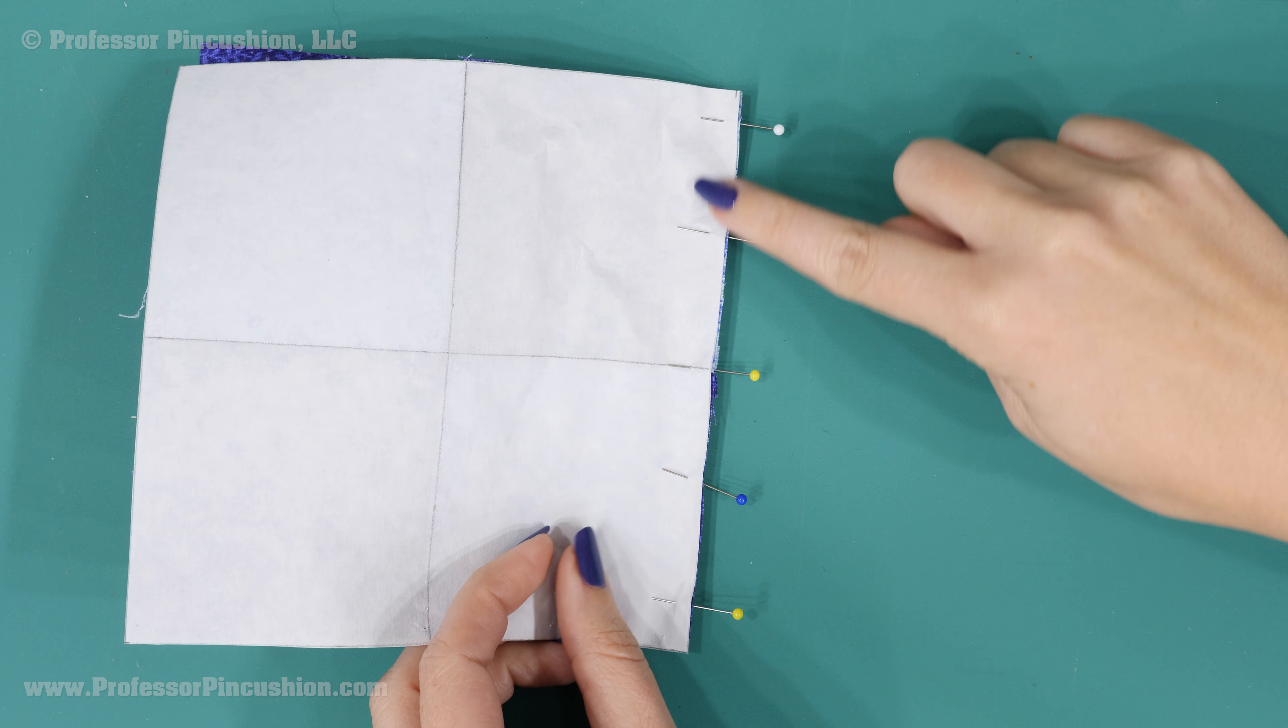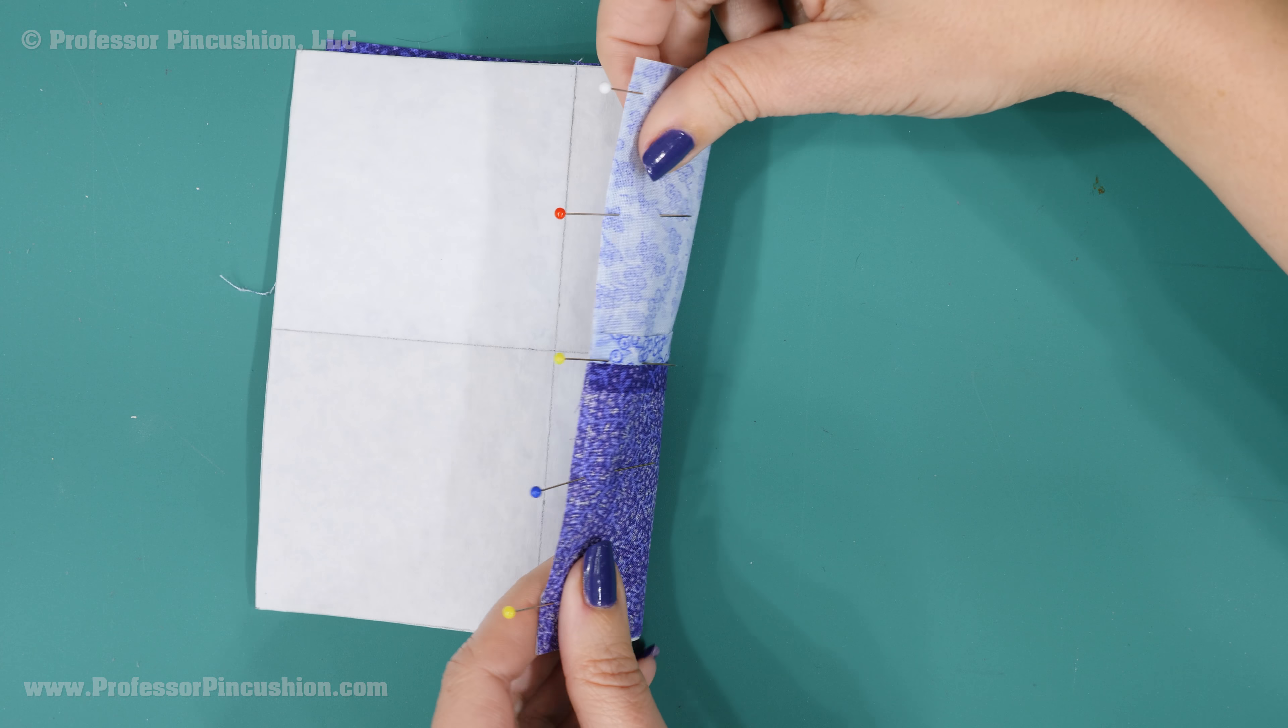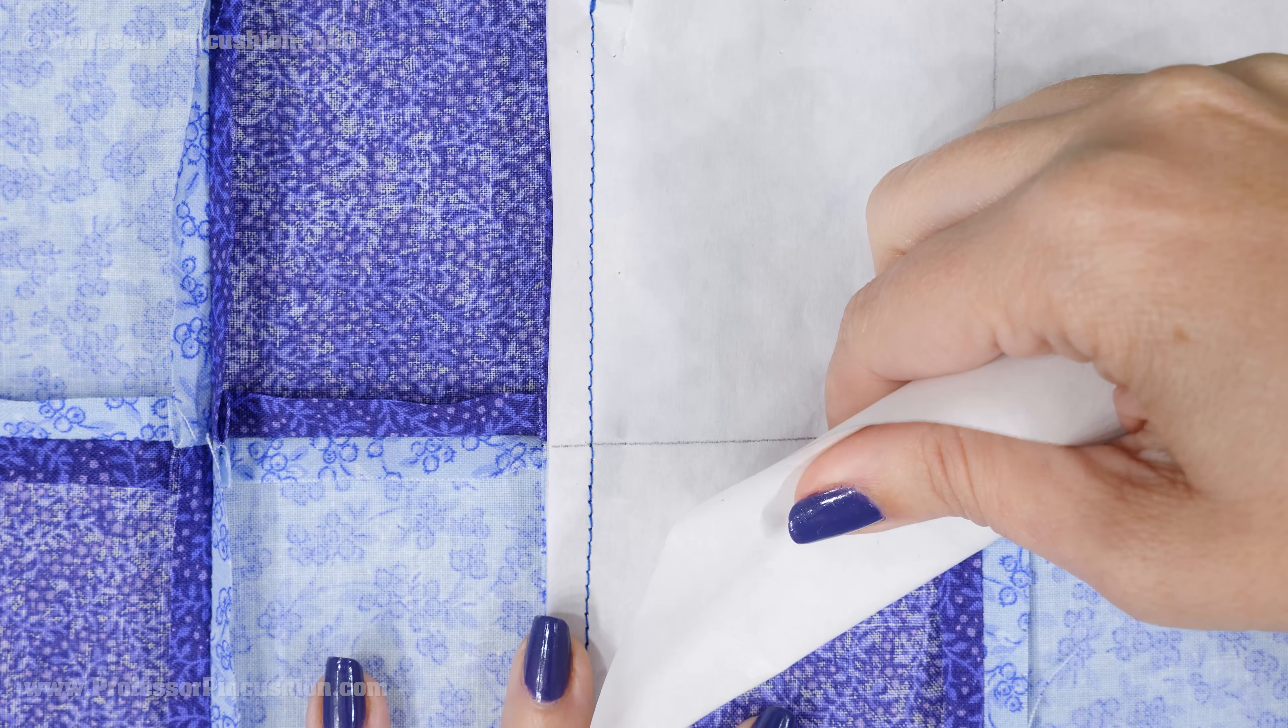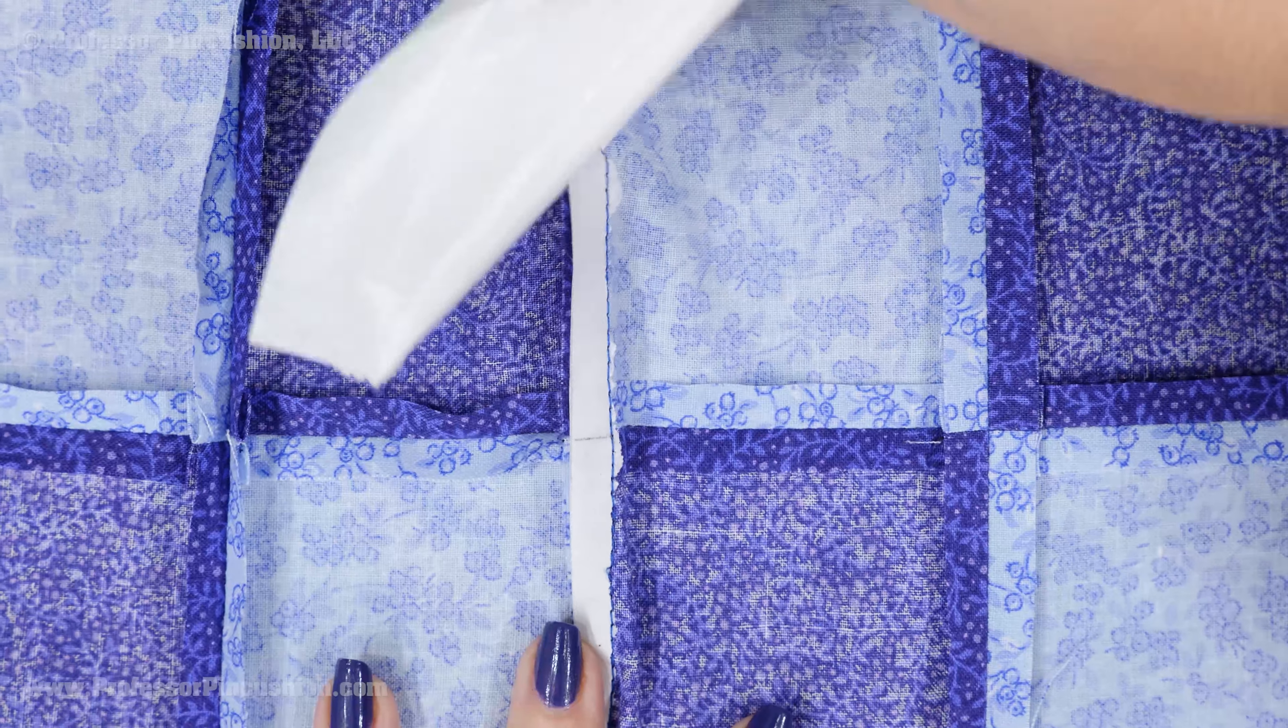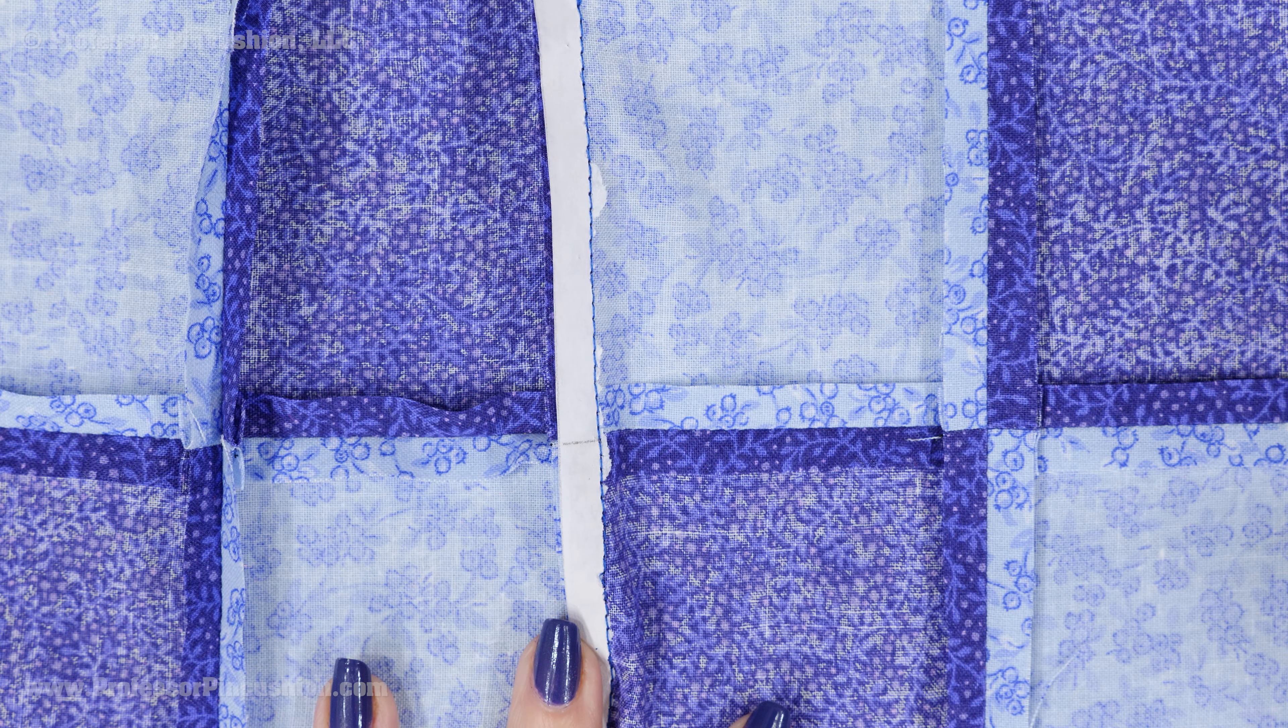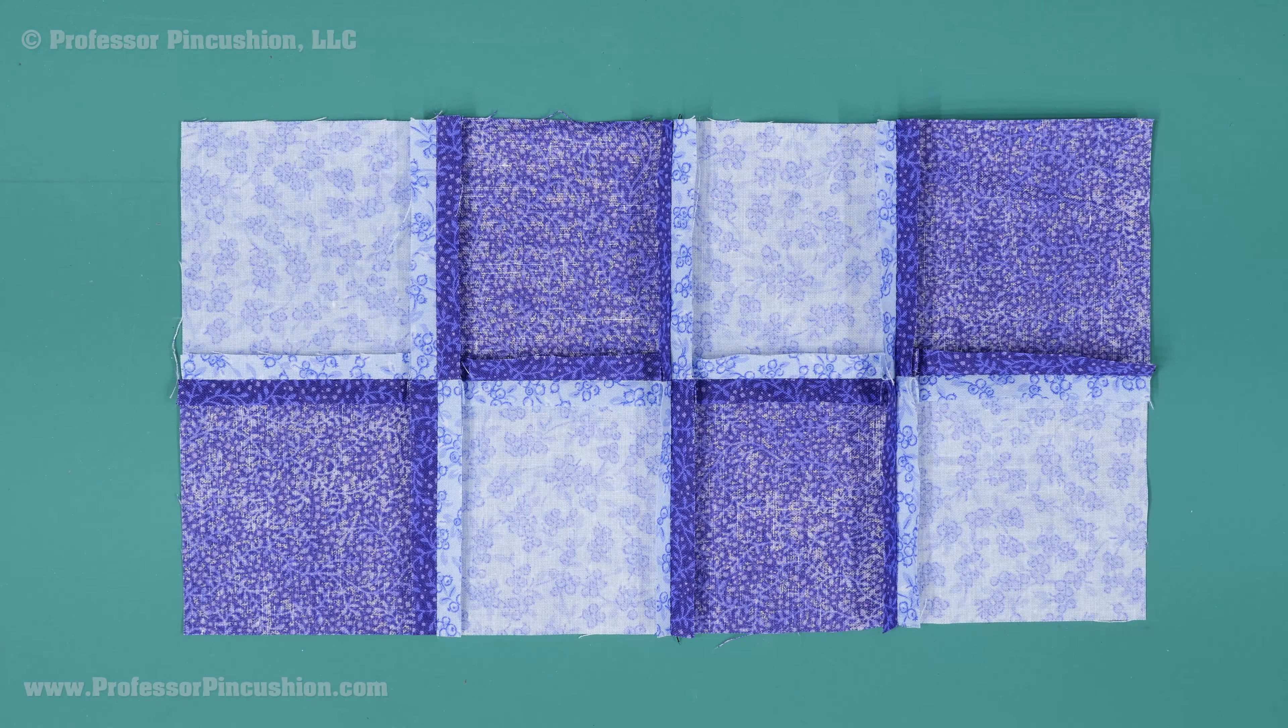When pinning blocks together, use your paper edge for matching raw edges and sew as normal. When you finish sewing all your blocks together, you can tear and peel the freezer paper off.